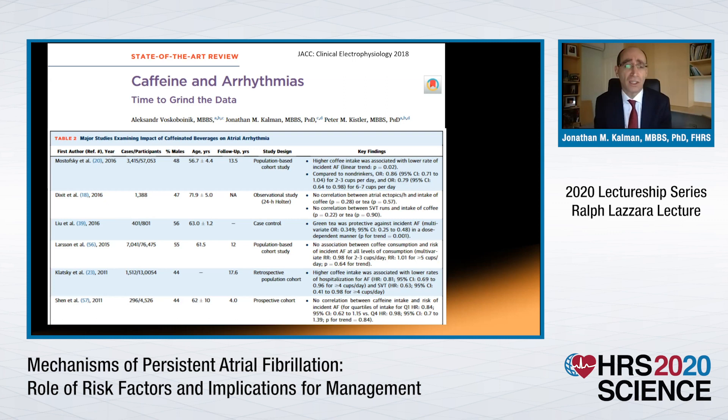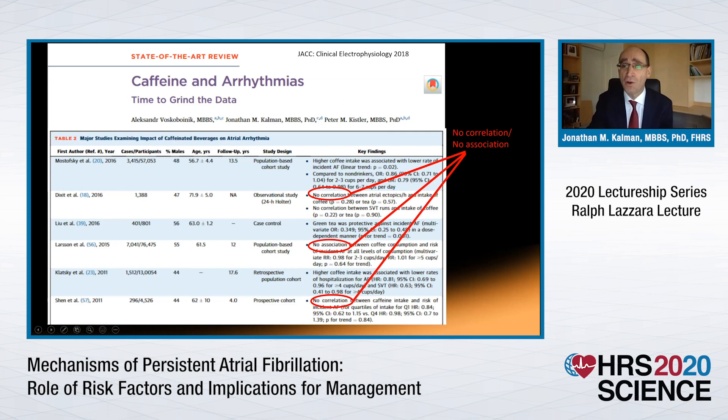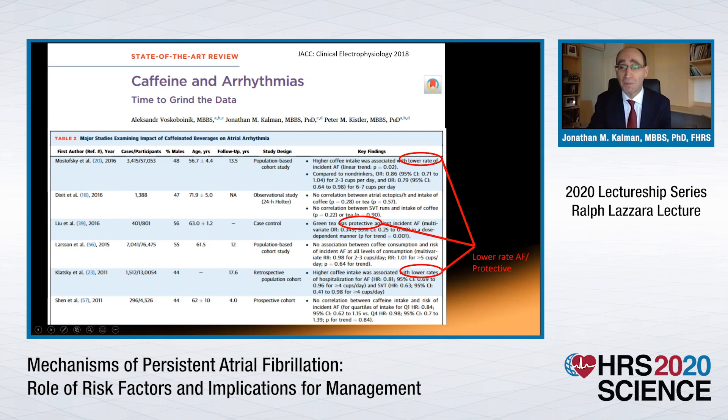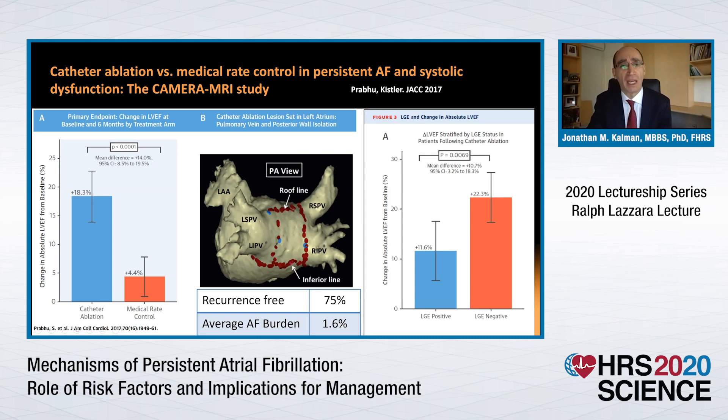Our colleagues frequently like to tell arrhythmia patients that they must give up caffeine. We looked at this systematically in a very large systematic review by my colleague Dr. Voskoboynik, and found either no correlation between caffeine and AF, or in a small number of studies, perhaps a protective effect. So at the very least, patients can continue to drink coffee.